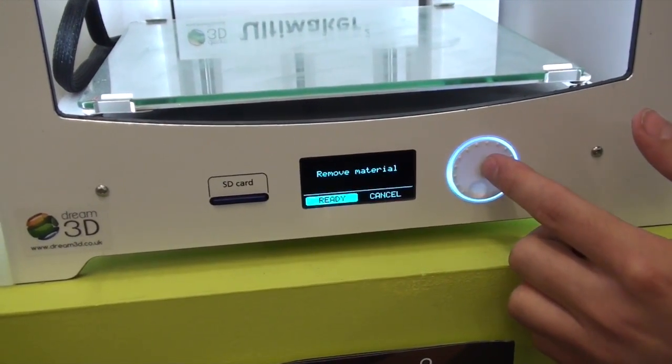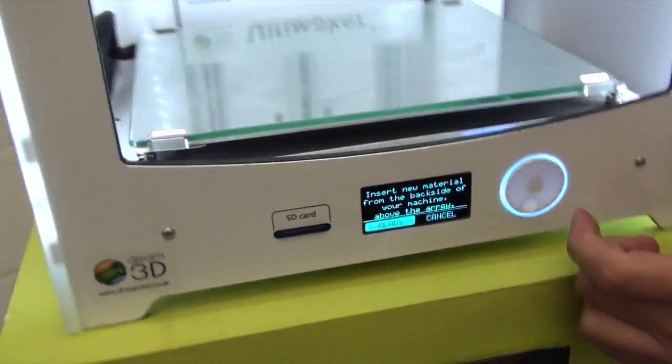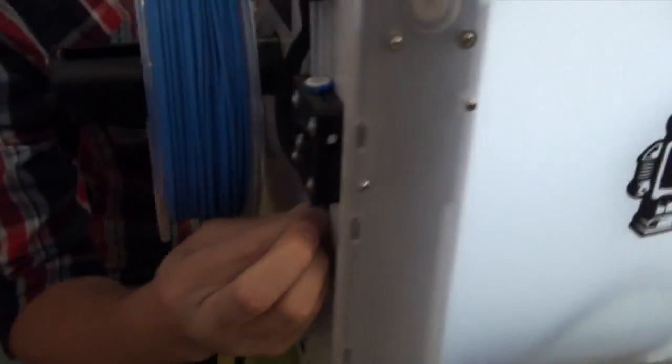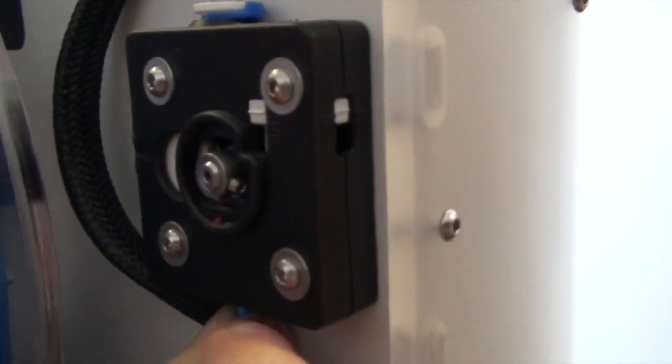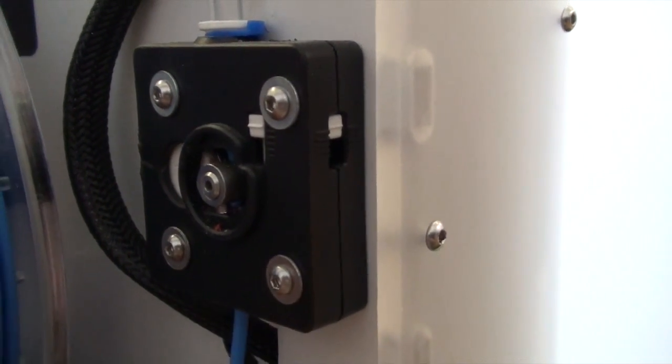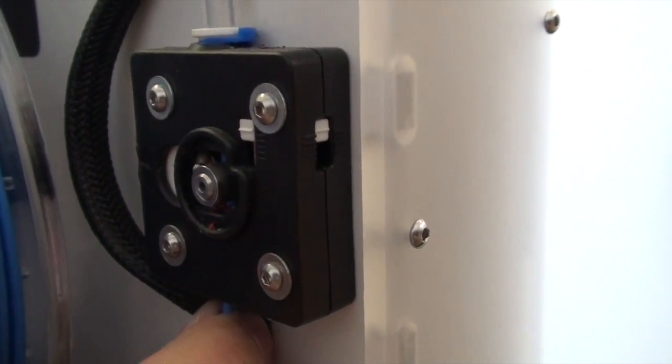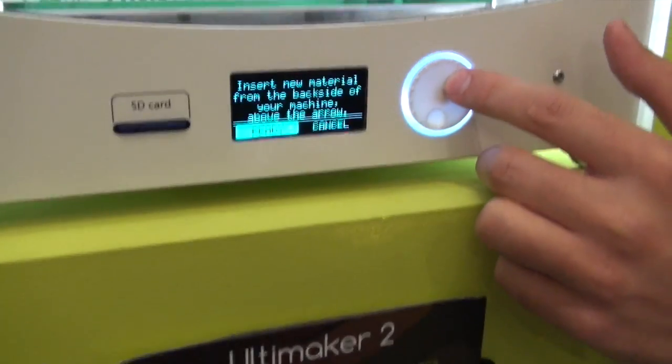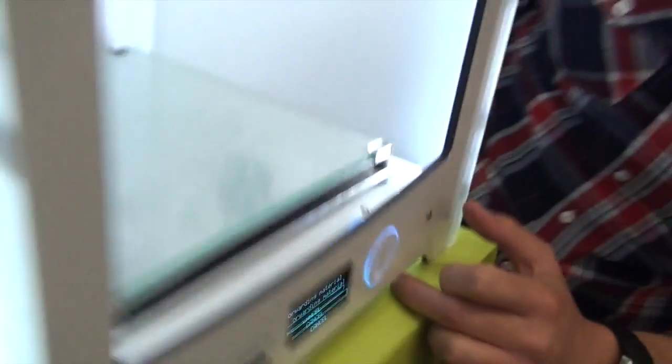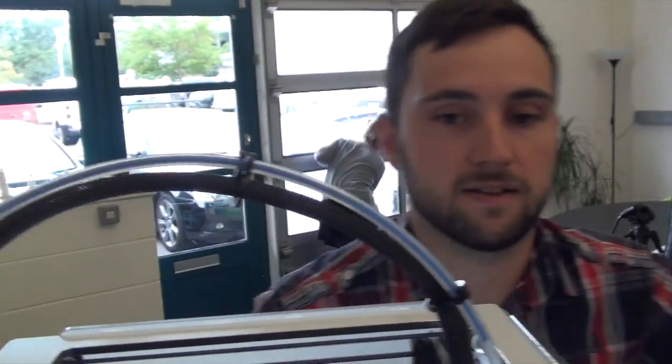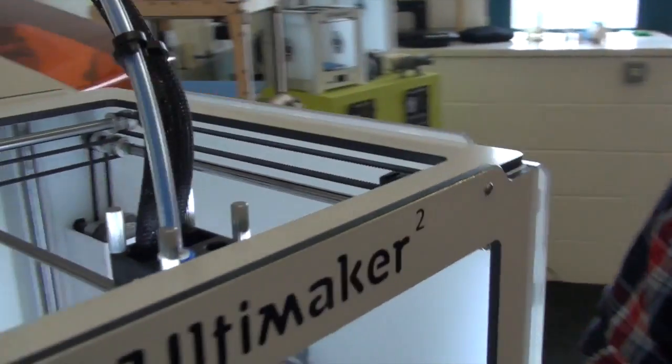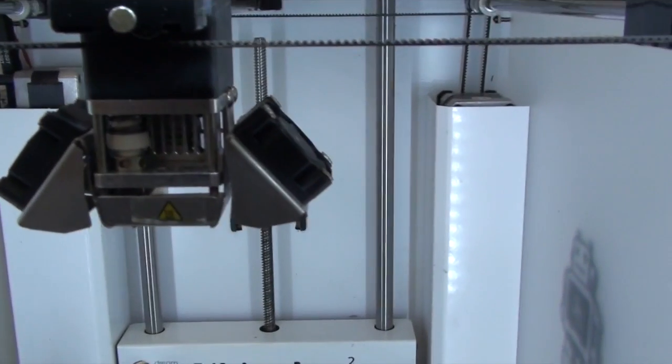It's saying remove material, and then we go ready. And the feeder will start to slowly feed in the new filament. Right, and that's got a grip now. So we can go around to the front again, and select ready. And it will just speed up the feeder.